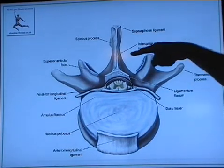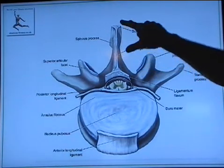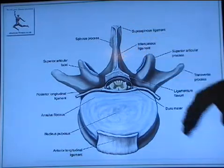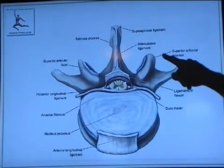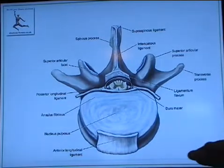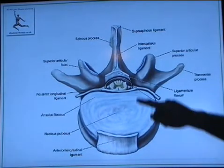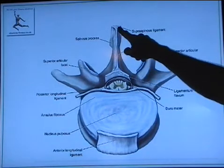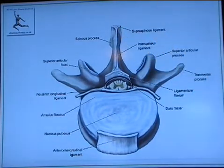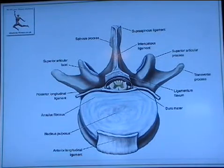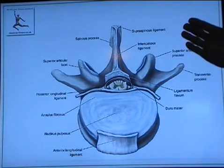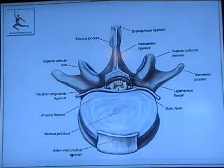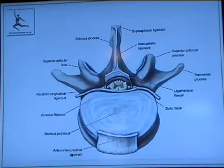Then in between the spinous processes, from one vertebra to another, we have our interspinous ligament — 'inter' because it's in between — and it runs along the length of the spinous processes. Then right at the very top, going from tip to tip of each spinous process, we have our supraspinous ligament.